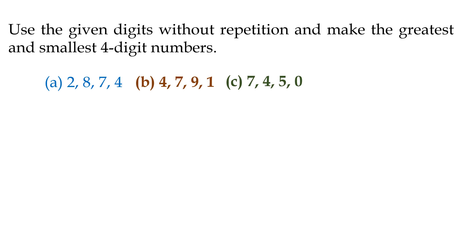Let us take one more problem. Use the given digits without repetition and make the greatest and smallest four-digit numbers. Part A: 2, 8, 7, 4. Part B: 4, 7, 9, 1. And Part C: 7, 4, 5, 0.